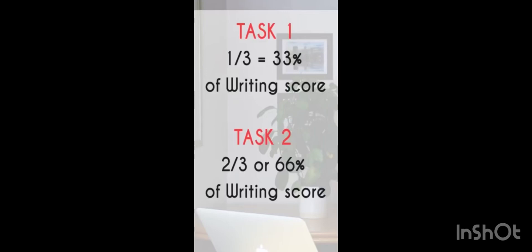Then, Task 1 is about one-third of the writing score, whereas Task 2 is two-thirds of the writing score. So don't spend too much time on Task 1. Spend the time on Task 2.